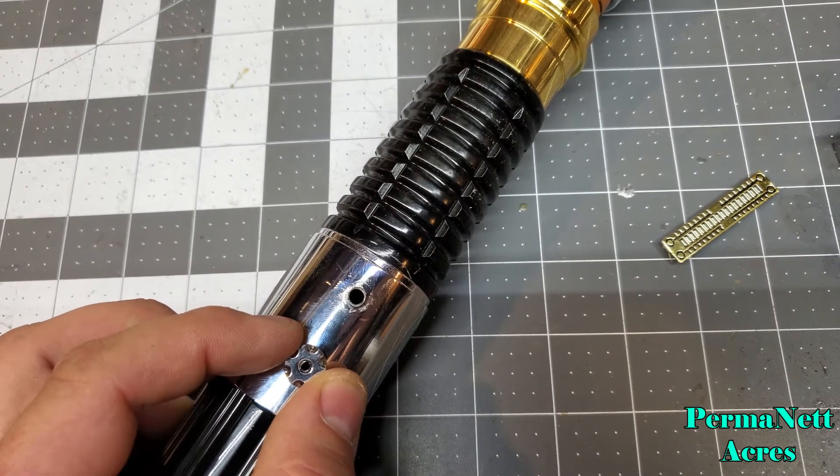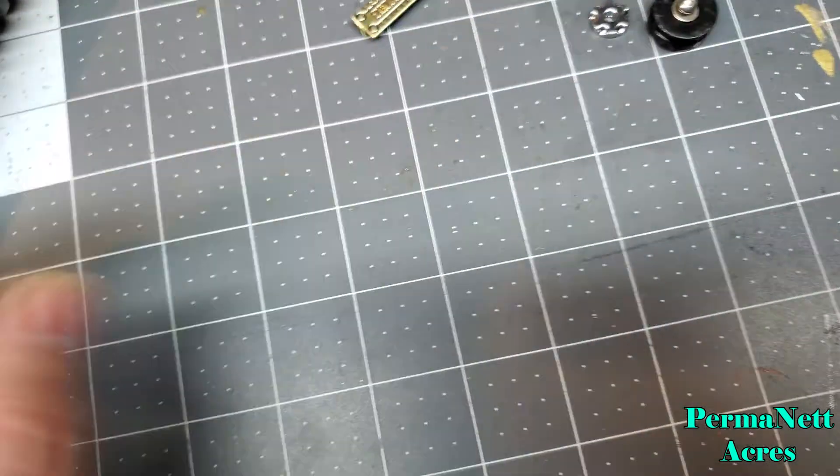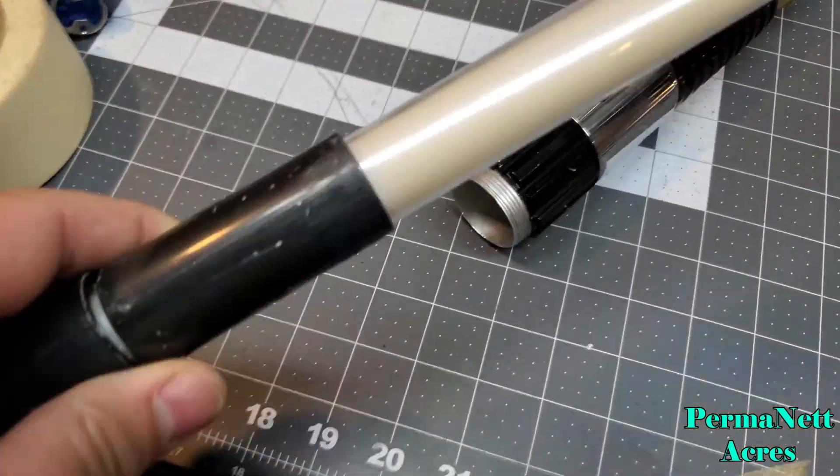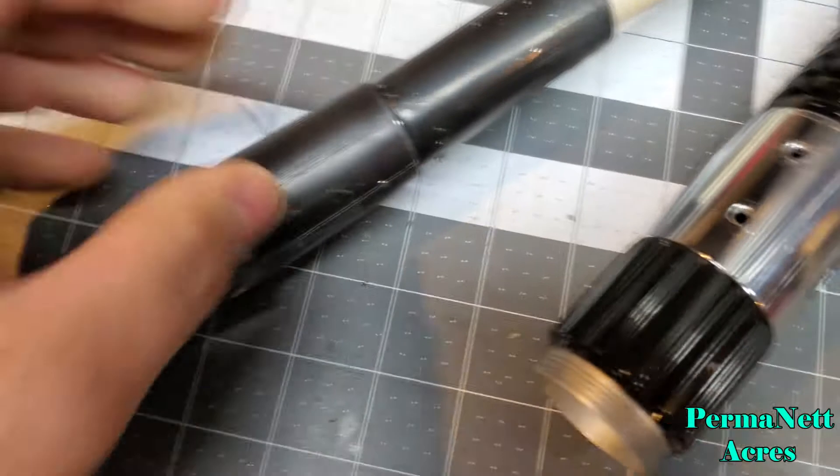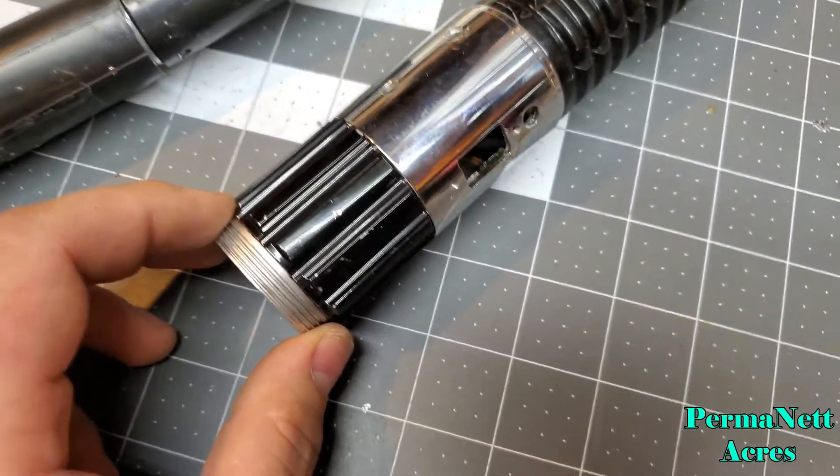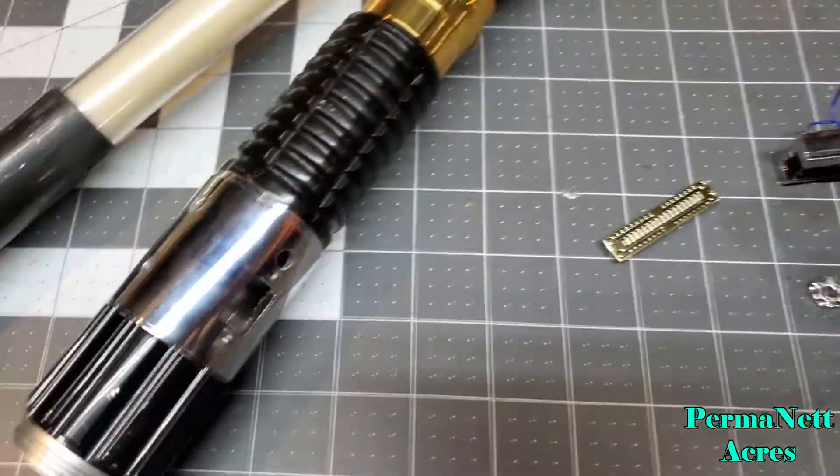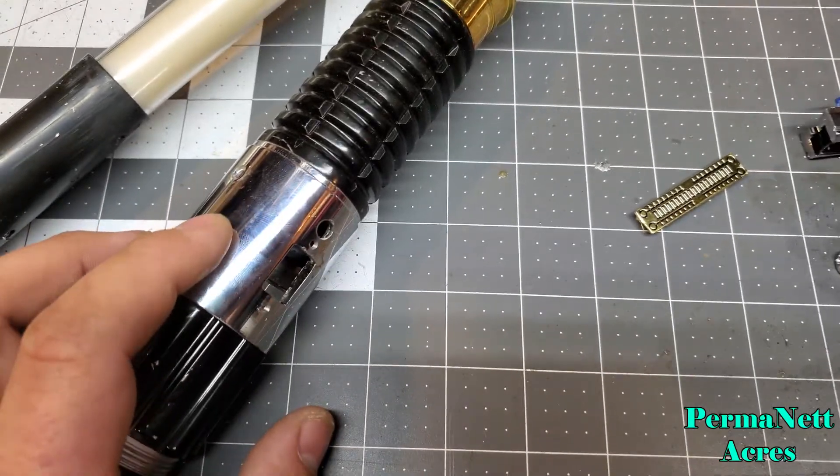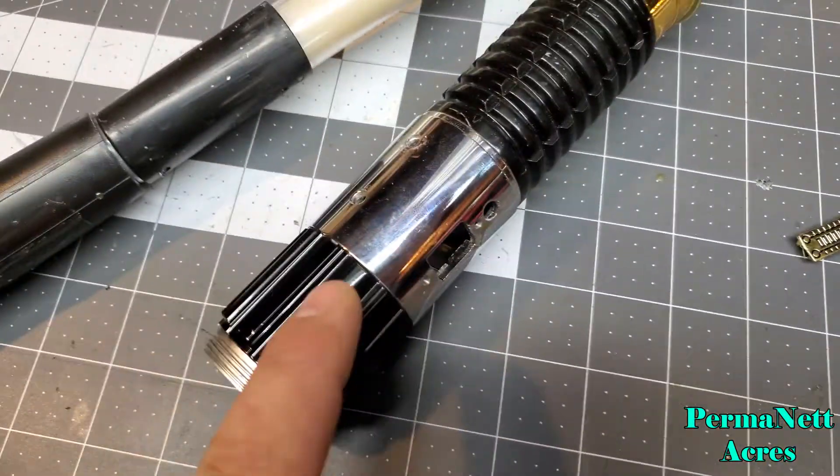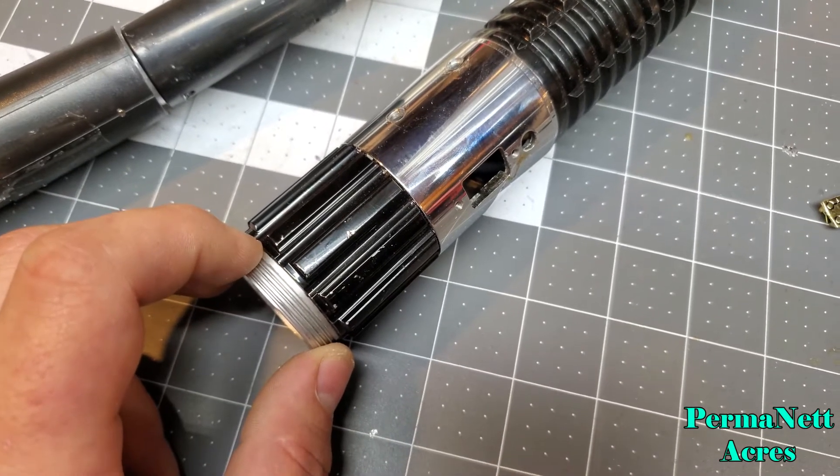The blade came as an incomplete hilt, so it doesn't have the bottom pommel region, but it's to the same specs as the Return of the Jedi one. The only difference is the ROTJ is more like the brushed aluminum look, while this one's more like the chromed plated metal. I just have to find a pommel piece for it.